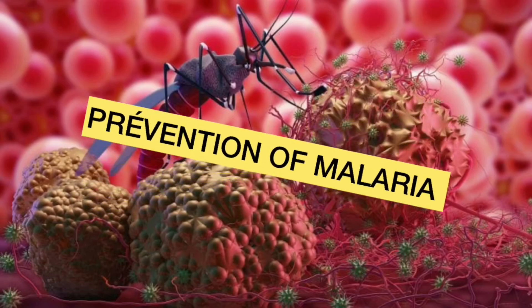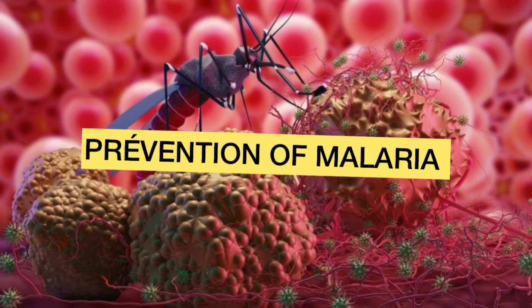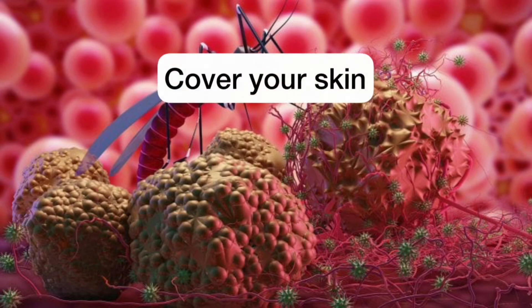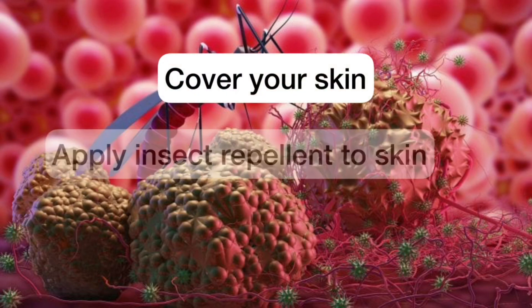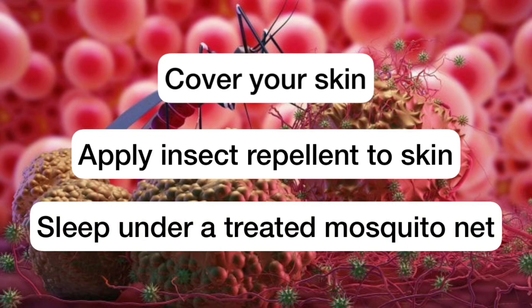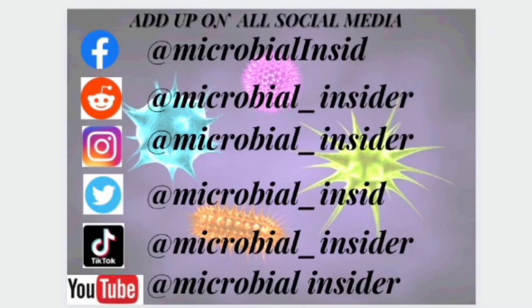Methods by which malaria can be prevented: cover your skin, apply insect repellent to skin, and sleep under a treated mosquito net. Thank you.